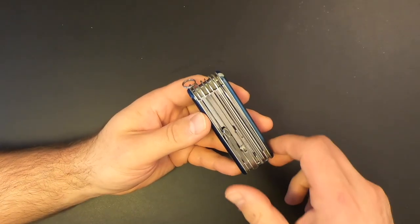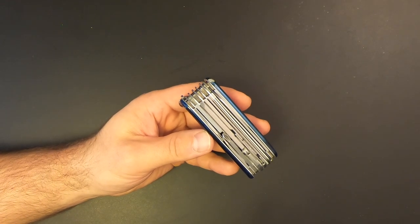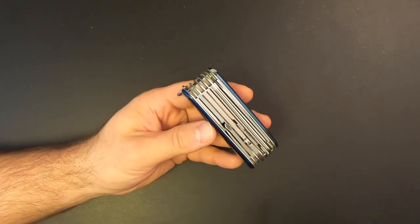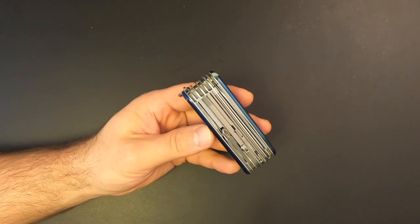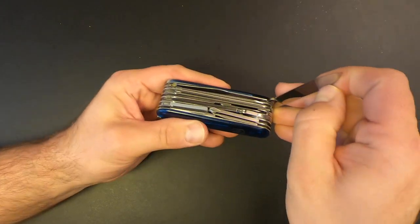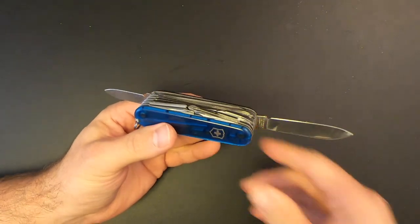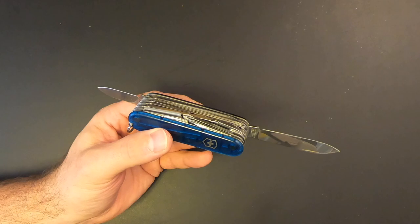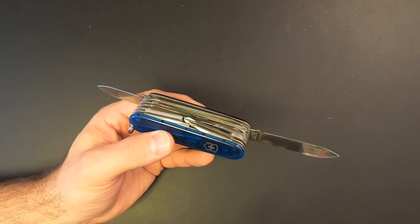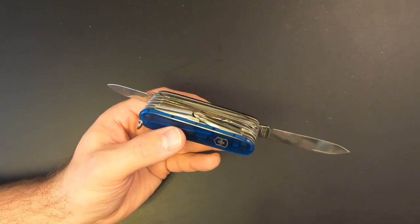So I'll go ahead and show you the tools on the Swiss Champ, but keep in mind that I might miss one or two functions along the way, just because some of them are fairly subtle, and some of these pieces have more than one purpose. If you want a detailed list of all the features, you can find it on the Victorinox website. So first up, we've got the two blades. We've got the larger blade right here. And then on the other side is the smaller blade. Each blade features a hollow grind, which makes it great for slicing and it's razor sharp out of the box. The hollow grind does dull fairly easily compared to other grinds. But the good news is that it's also very easy to resharpen these blades.